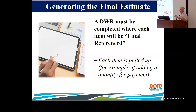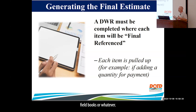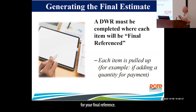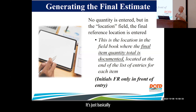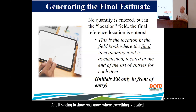If you have spreadsheets — a lot of people go to spreadsheets and get away from the old orange field books — you can just put 'see spreadsheet' on your DWR for your final reference. No quantity is entered on this DWR. Site Manager is going to pull that and put it in our audit workbook showing where everything is located.